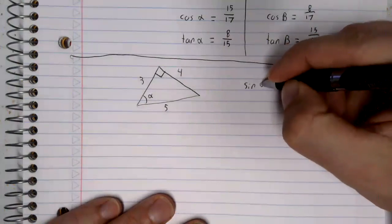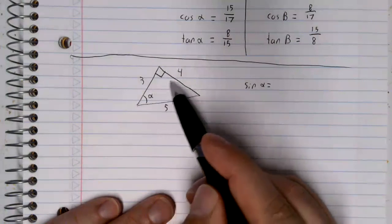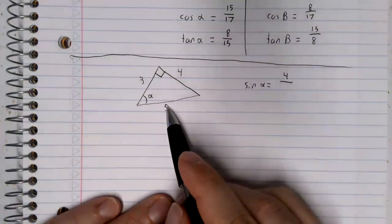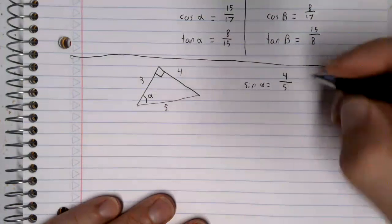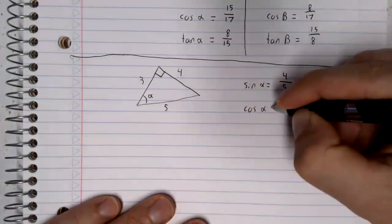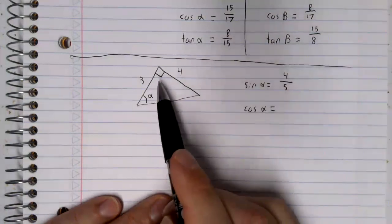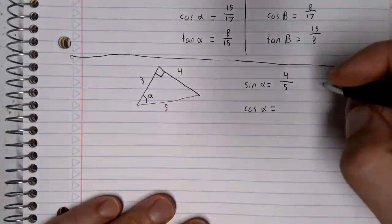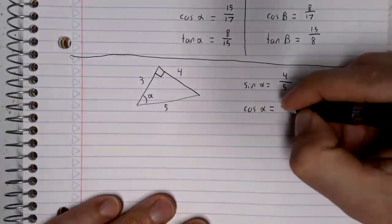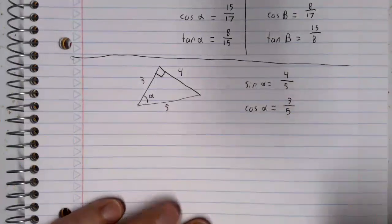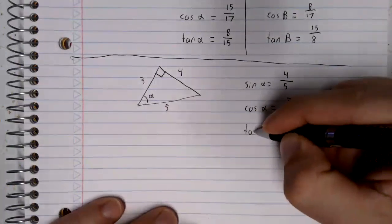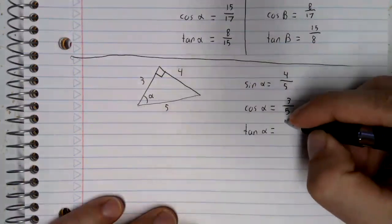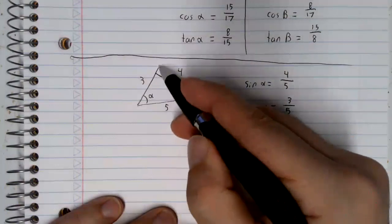The sine of alpha is the opposite side over the hypotenuse. And the cosine of alpha is the adjacent side over the hypotenuse. And the tangent of alpha is the opposite side over the adjacent side.